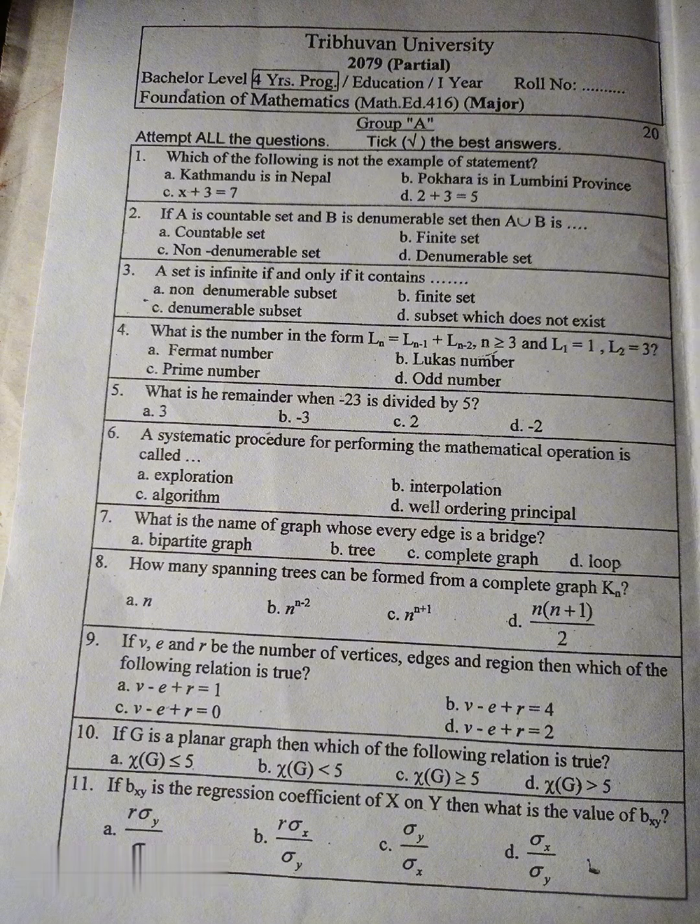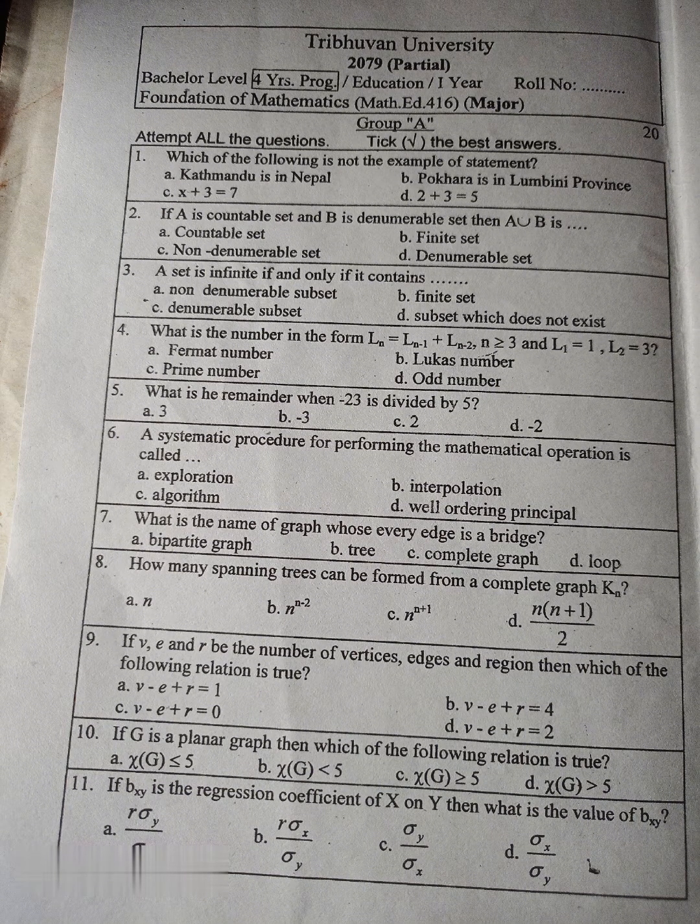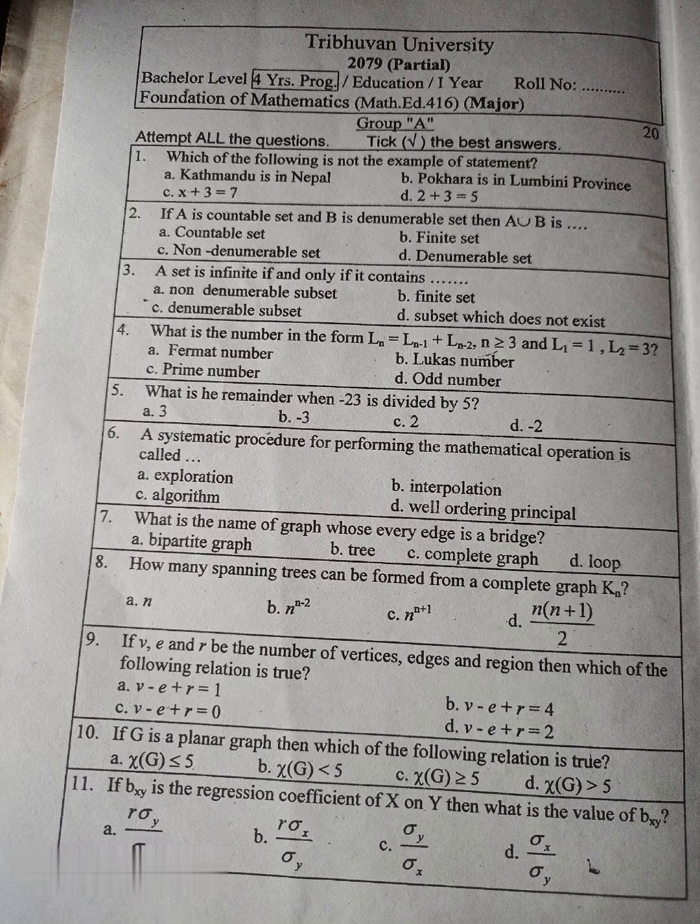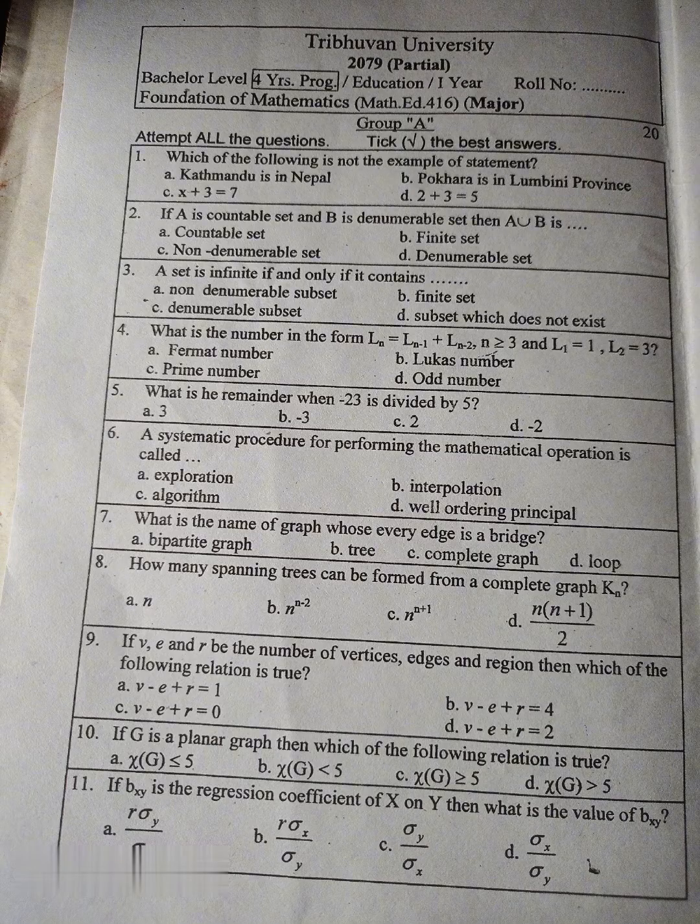Question number 2: If A is countable set and B is denumerable set, then A union B is... A. countable set, B. finite set, C. non-denumerable set, D. denumerable set.